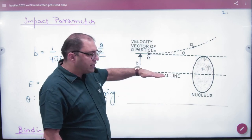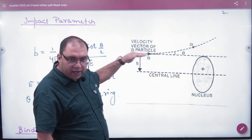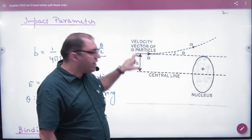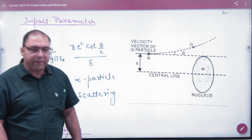So from the center line, the perpendicular distance of the alpha particle is the impact parameter. We represent the impact parameter as B.